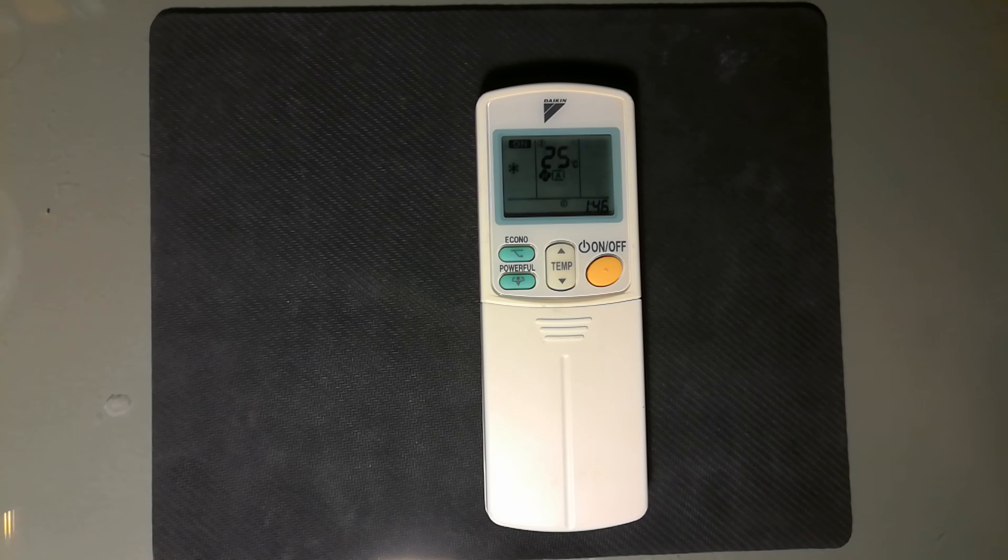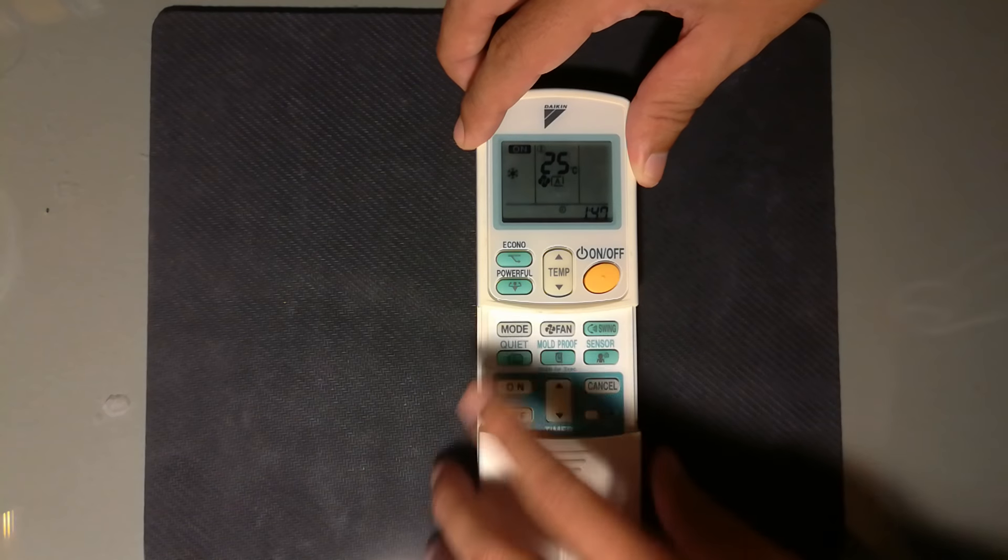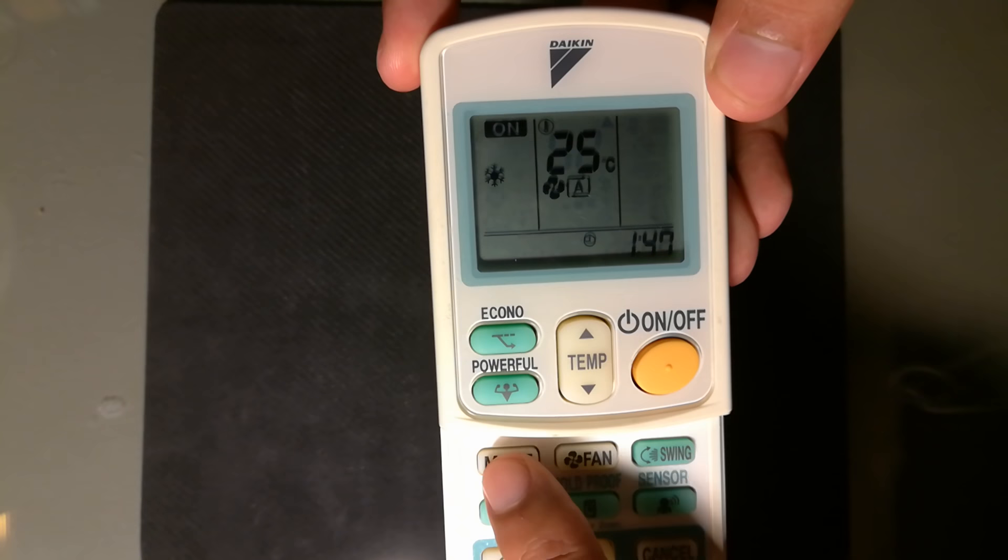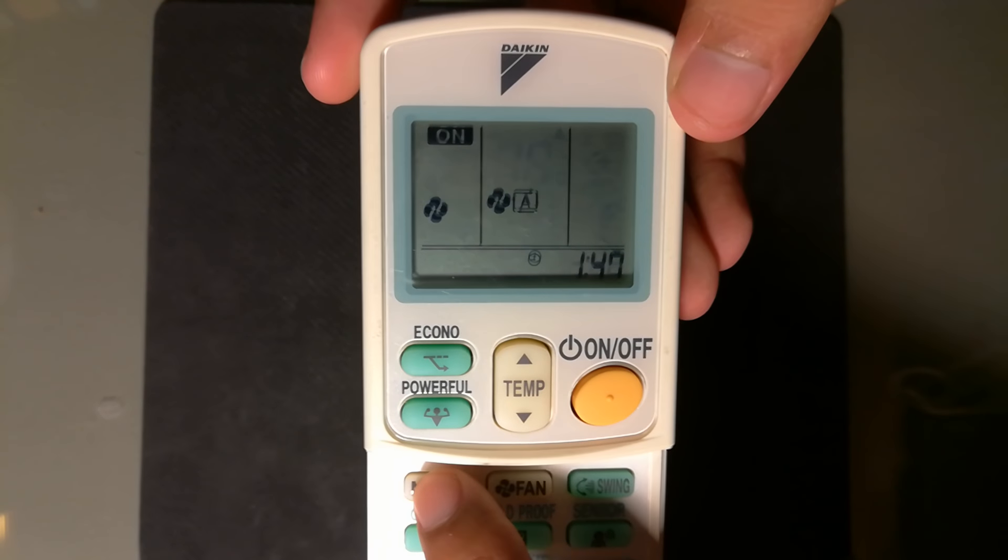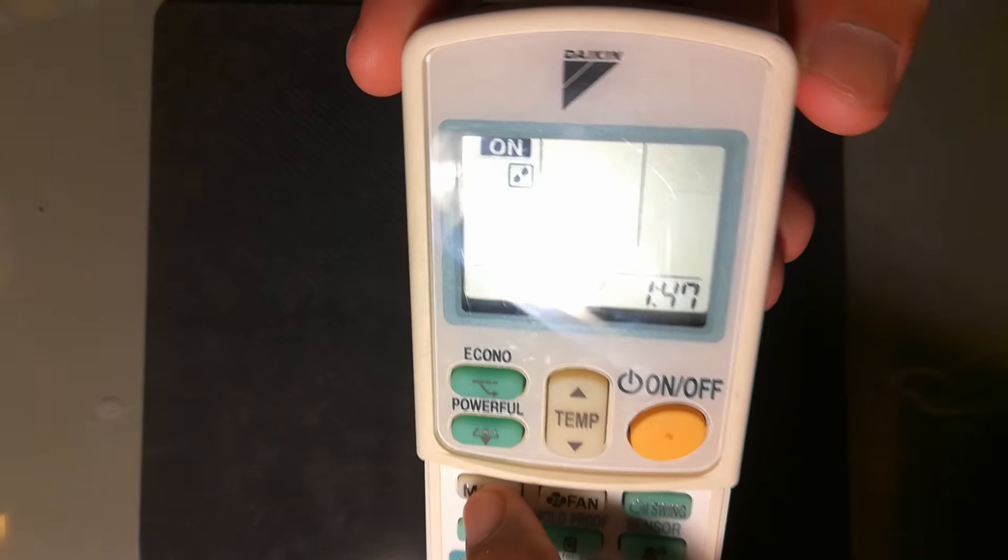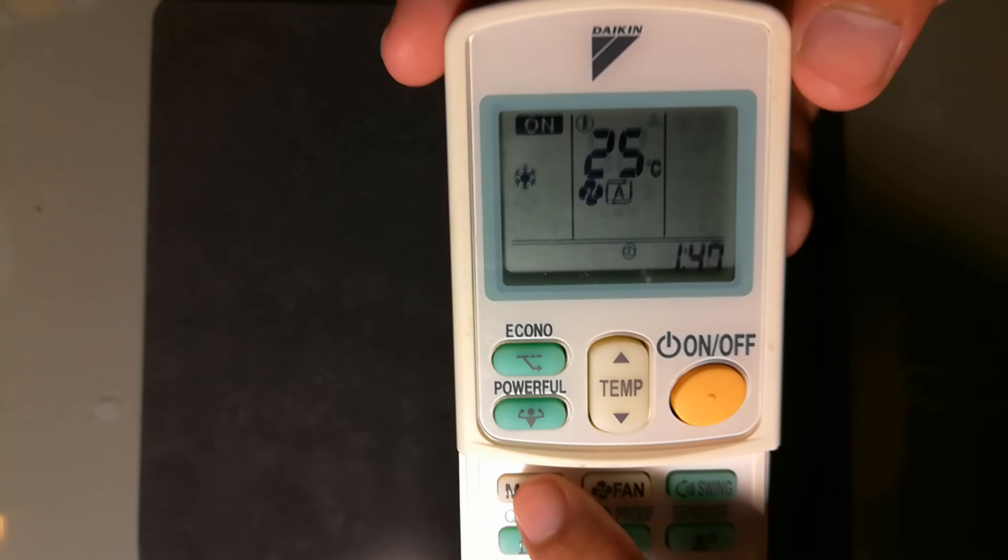Good morning everyone. Today I'm going to show you what the mode button is for with this Daikin air conditioner remote controller. The mode button is here. When you press it, the logo changes - there's a fan icon, water drop icon, and ice logo. Now let's start with the ice logo.